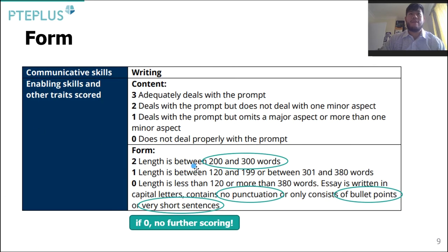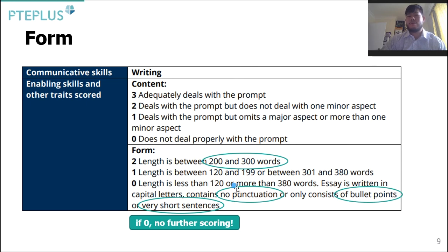The second requirement looks at form. Two marks are allocated for form. You get two if the length is between 200 and 300 words, and you get one if the length is between 120 and 199 words, or between 301 and 380 words. If the length is less than 120 or more than 380 words, the essay is written in capital letters, contains no punctuation, or consists of bullet points or very short sentences, then you get zero. What we're aiming for is always a length between 200 and 300 words — that's easily achievable since the word count is displayed at the bottom.